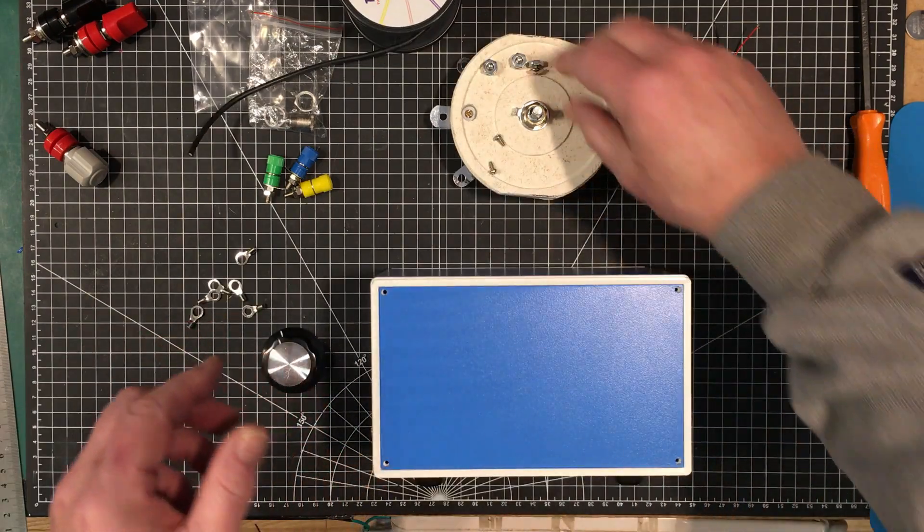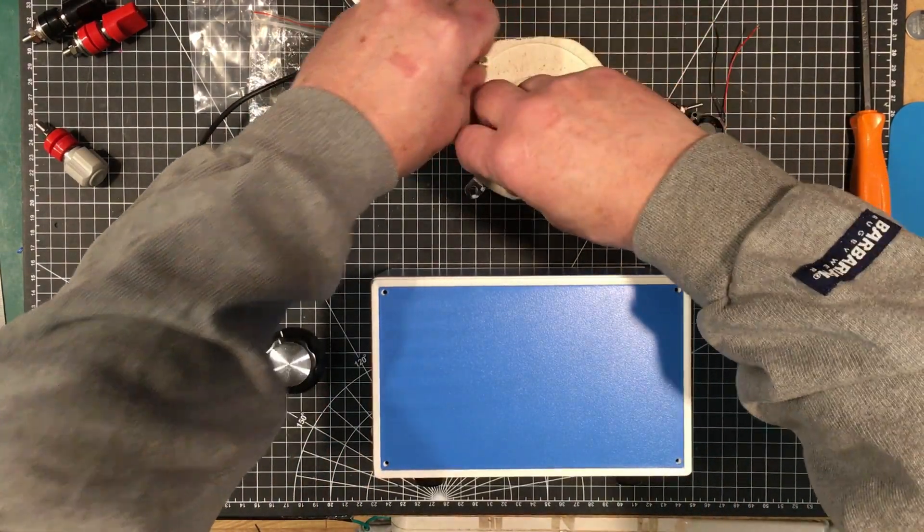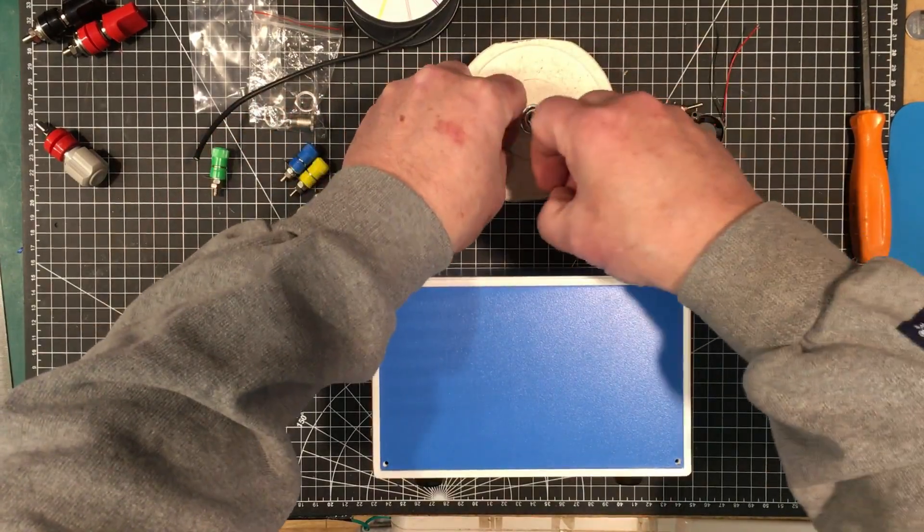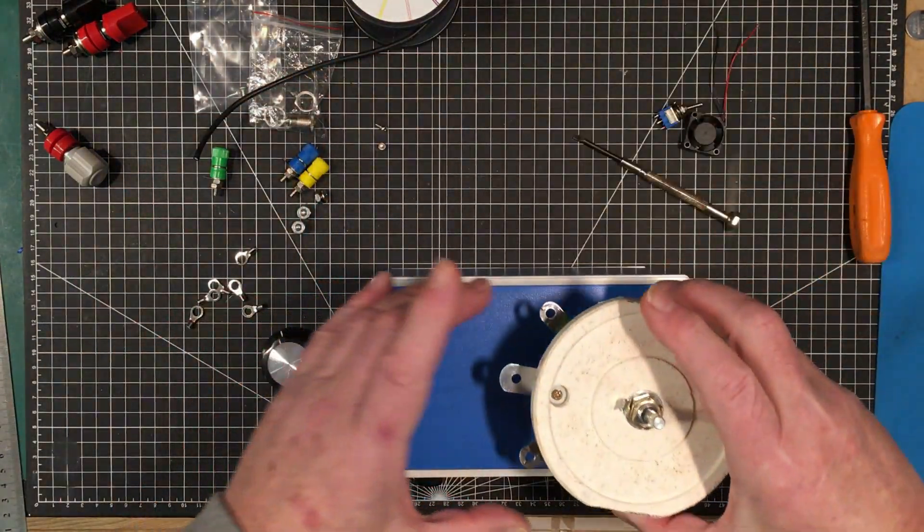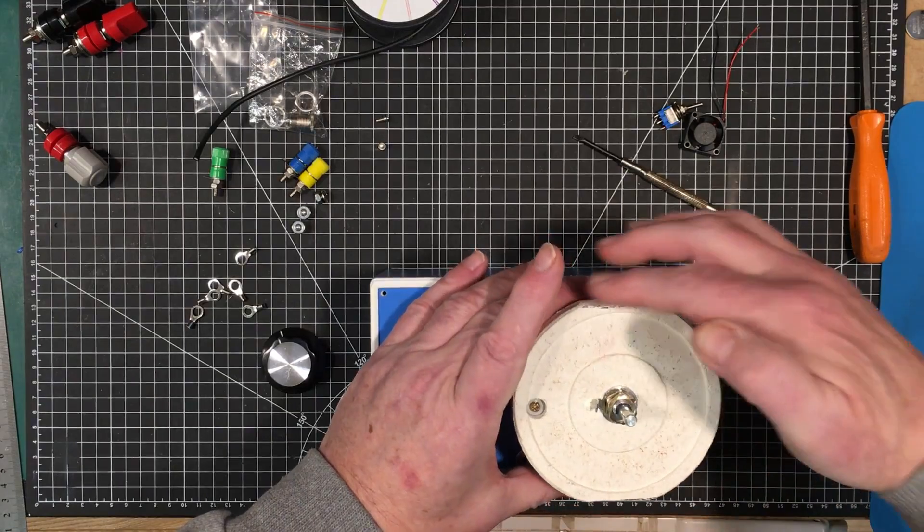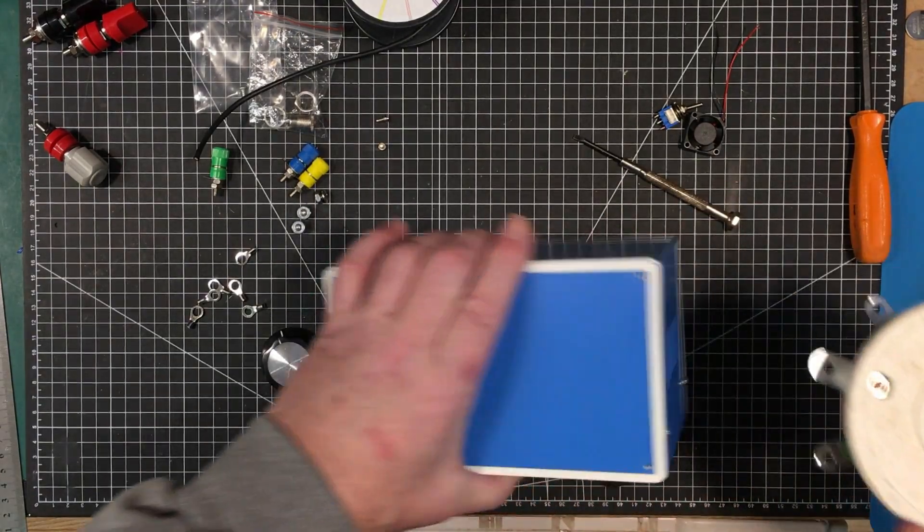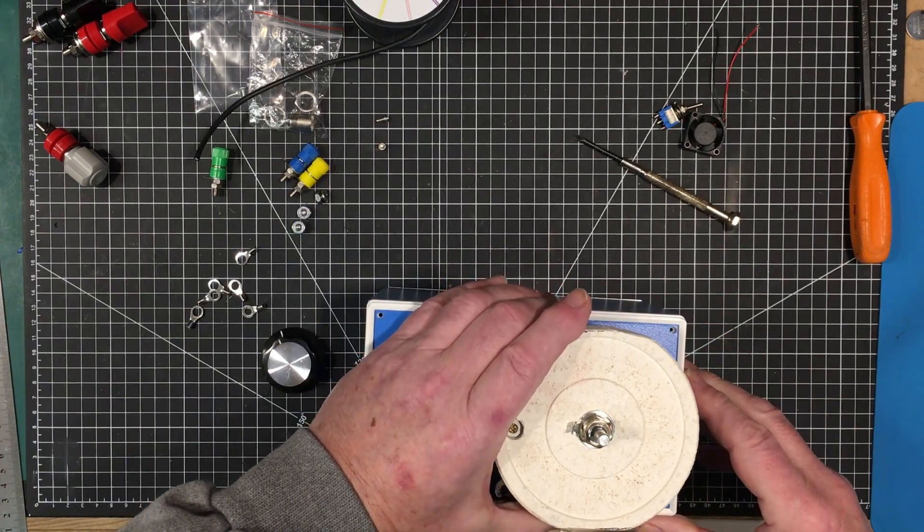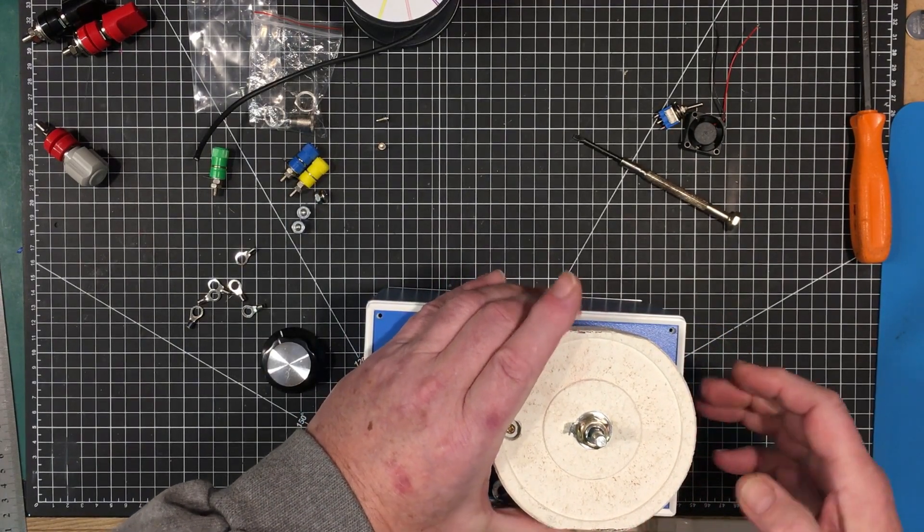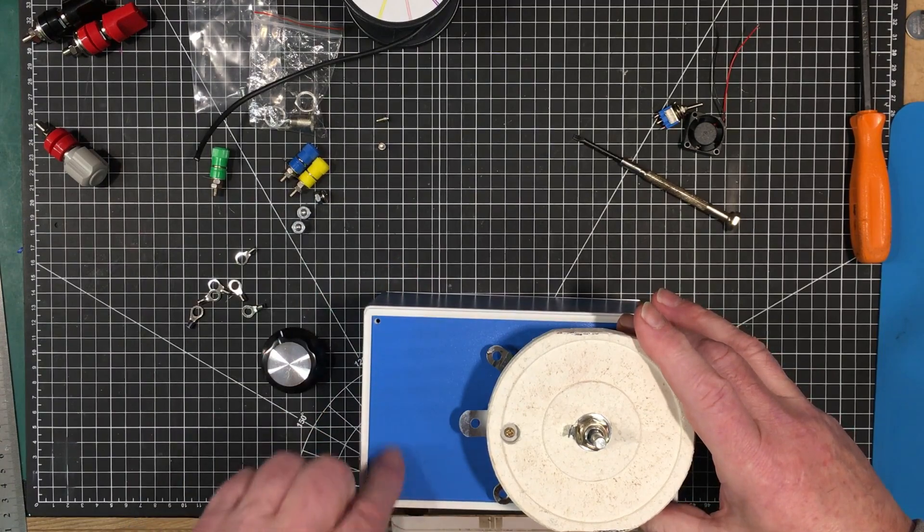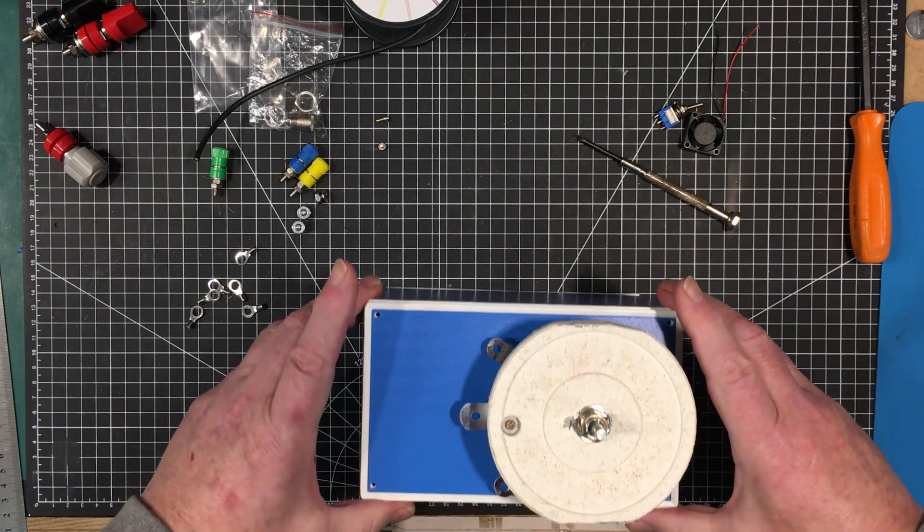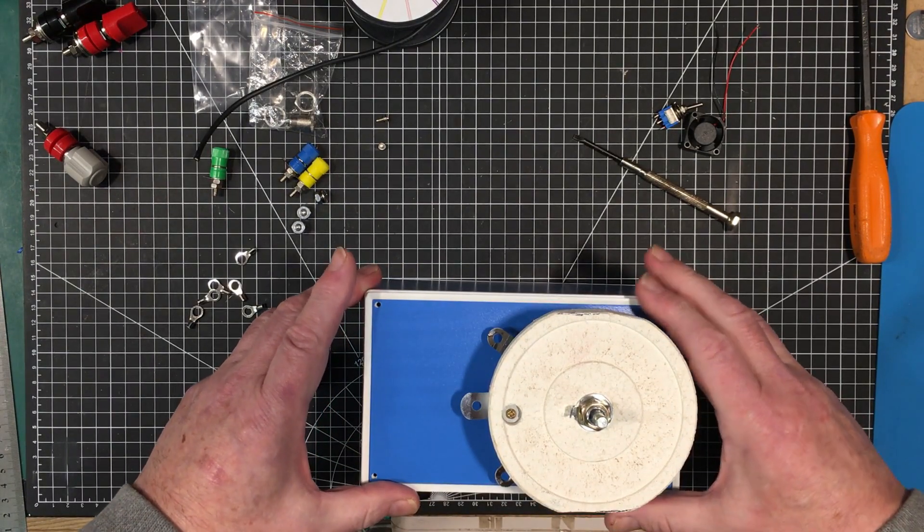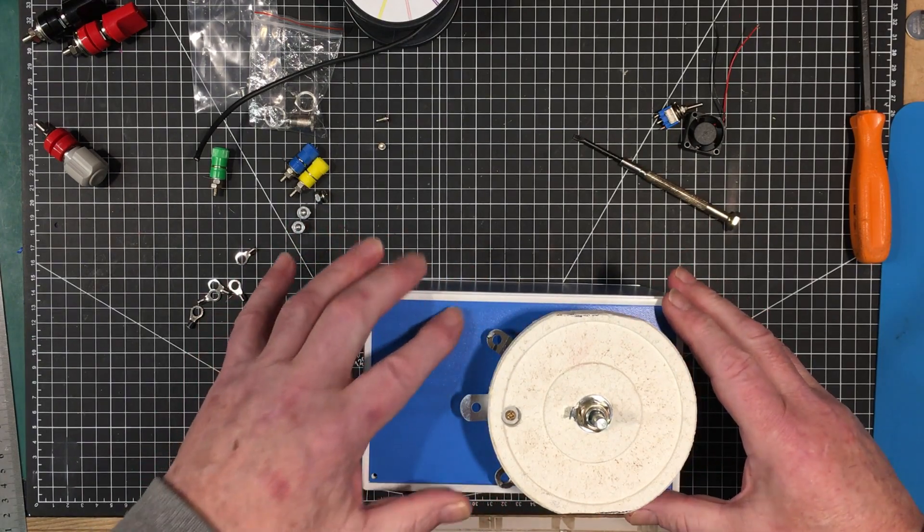I'm going to mount this as far over to this side as I can. I flattened off the edges here because it just wouldn't fit in there. I'll mount this as far over to the edge as I can without touching the side to leave ample room for the binding posts.